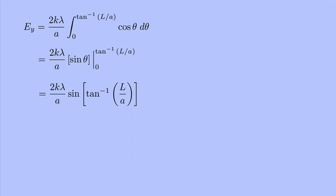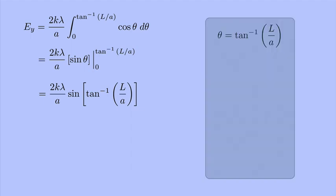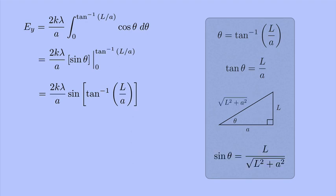Now theta was the inverse tangent of L over a, so the tangent of theta is L over a. Let's draw a triangle and see what that looks like. Here's theta, and the tangent of theta is L over a, so L is the opposite side and A is the adjacent side. That means the hypotenuse is the square root of L squared plus a squared. So the sine of theta is L over the square root of L squared plus a squared.